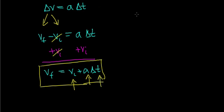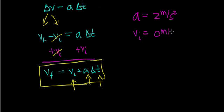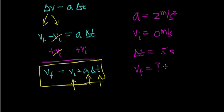As an example, suppose you have some object accelerating at a rate of 2 meters per second squared — that is, the velocity of this object is changing by 2 meters per second per second. Let's say the initial velocity of this object is 0 meters per second, meaning it starts from rest. You want to know what the final velocity is after this object has had a chance to accelerate for 5 seconds. So you're looking for v final — that's the unknown.